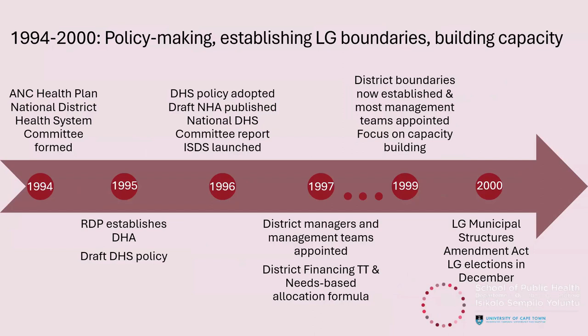In 1994, the ANC Health Plan proposed community health services to be part of the district health system with a district health authority responsible for managing all community health services. A National District Health Services Committee was also established to shift from a curative to a more PHC-based health system. It produced the first policy document for public comment, which recognized variation in capacity across South Africa and gave three governance options: a provincial option retaining full authority; a statutory district health authority; and the preferred but relatively rare local government option where local government would take responsibility for the district health system.